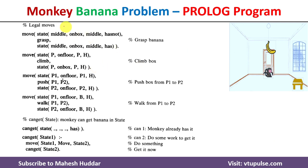The first component of the Prolog programming language is to write the legal moves. We need to write all possible legal moves.